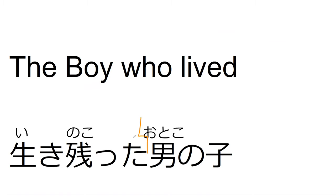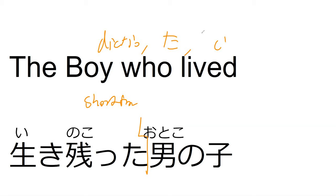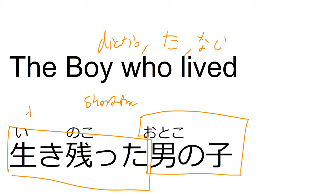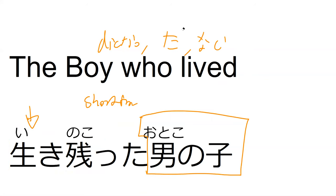In Japanese relative clauses, the verb is going to be in short form — dictionary form, ta-form, or nai-form. Those are the three forms. So when you see a verb in that form and it's touching a noun like 男の子, it means we're using that verb and whatever is attached to it to describe the noun. 生き残った means 'who survived,' so 生き残った男の子 is 'the boy who survived.' You could also have 生き残る男の子, which would be 'the boy who lives' — the tensing changes just like in English.